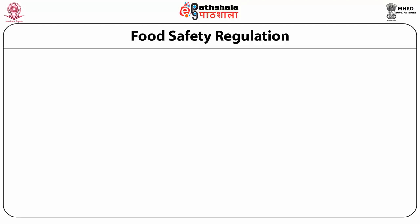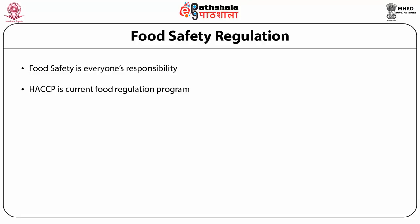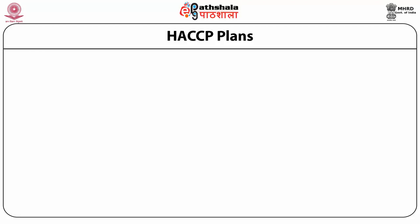Regarding food safety regulation: food safety is everyone's responsibility. HACCP — Hazard Analysis Critical Control Point — is the current food safety regulation program. This program has several plans, including assembling a HACCP team that checks food quality and responds if any outbreak occurs in the community.